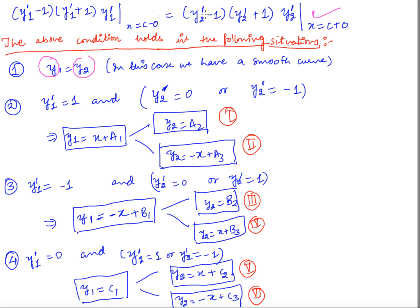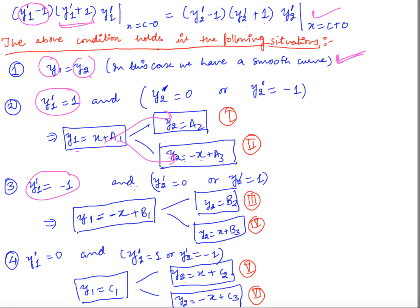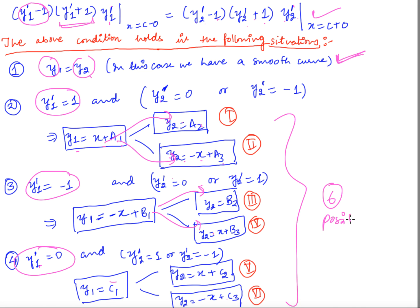The first Weierstrass condition is satisfied in several cases. Excluding the smooth case y1' = y2', the possibilities are: (1) y1' = 1, y2' = 0; (2) y1' = 1, y2' = -1; (3) y1' = -1, y2' = 1; (4) y1' = -1, y2' = 0; (5) y1' = 0, y2' = 1; (6) y1' = 0, y2' = -1. These are the six cases where the first Weierstrass condition is satisfied for broken extremals.